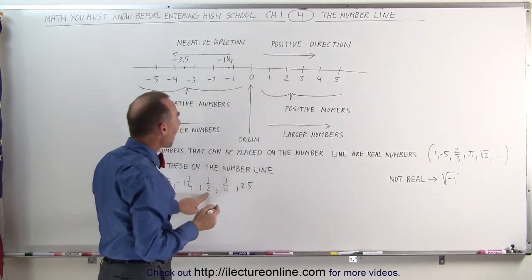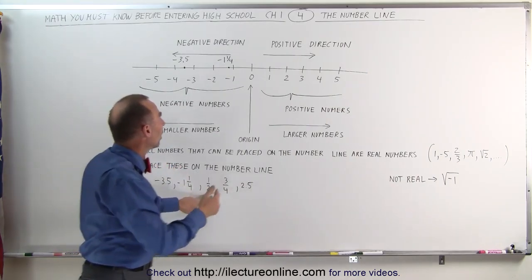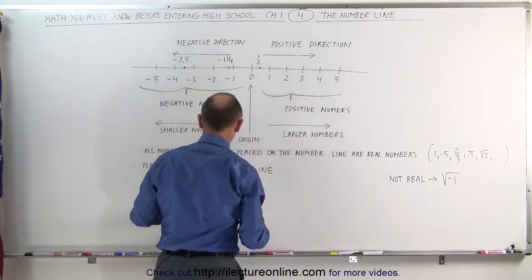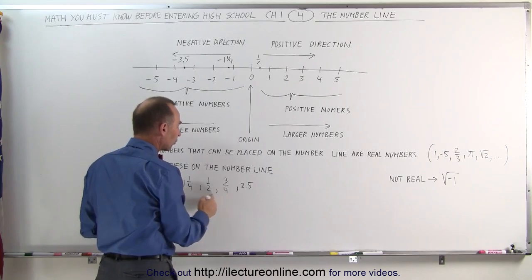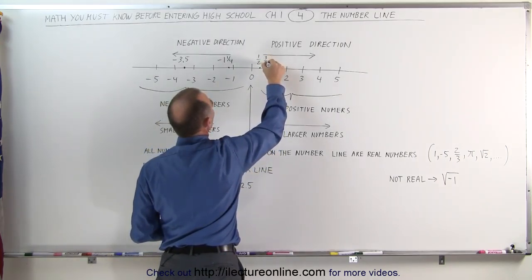The number one-half is a positive number, it must be to the right of 0. It's halfway between 0 and 1, we place it right there, that's the number one-half. The number three-quarters is three-quarters of the way from 0 to 1, which means it's put right about there. This is the number three-fourths.